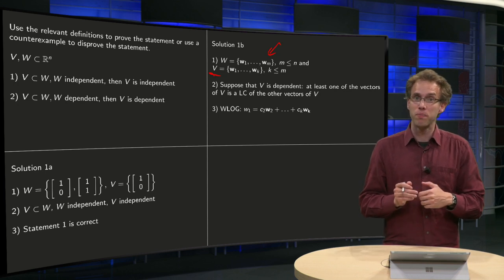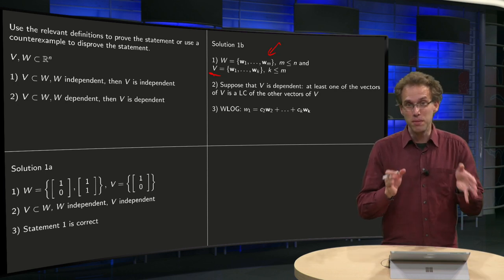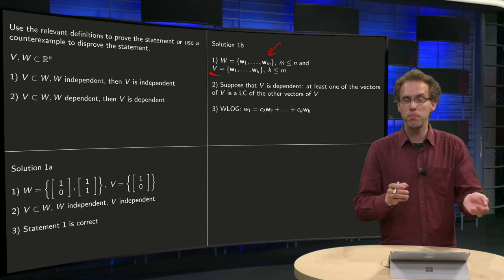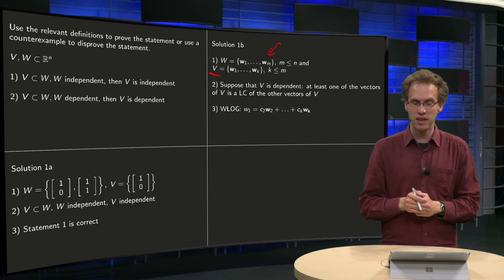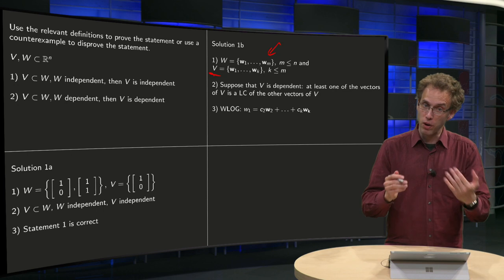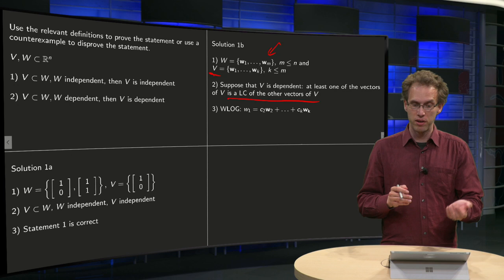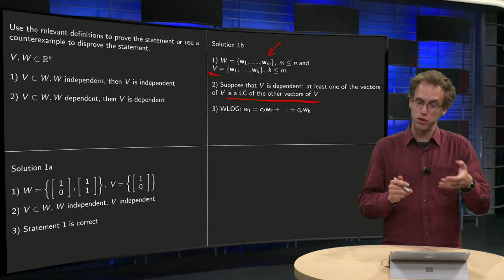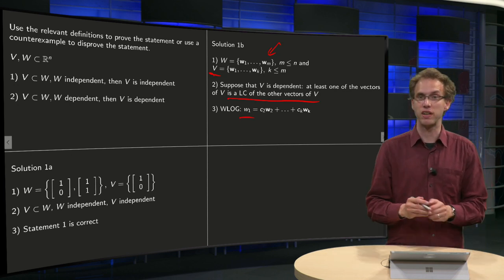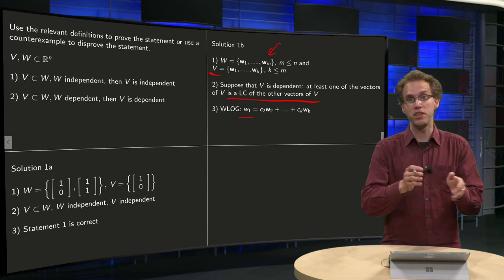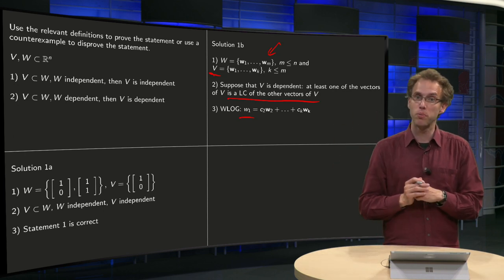Now, suppose now, on the contrary, that V is dependent, so I want to show that V is independent, but now suppose V is dependent, then you know that at least one of the vectors of V is a linear combination of the other vectors of V, and without loss of generality, you can assume that that vector is the first vector, so we know that W1 is a linear combination of W2 up to Wk.